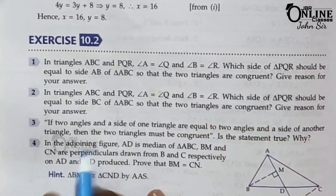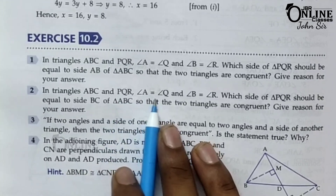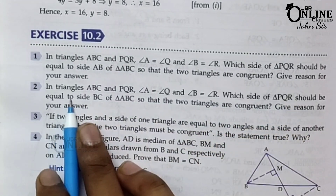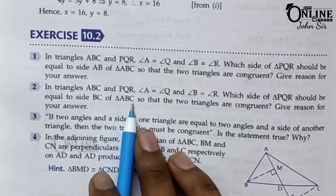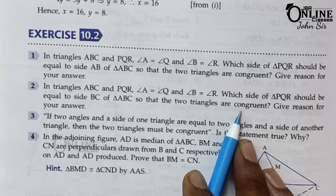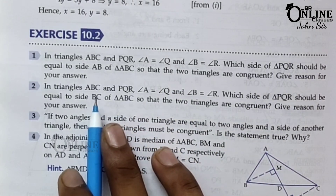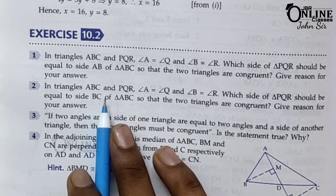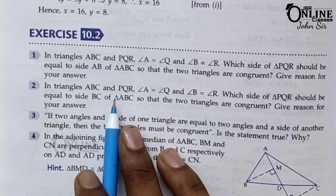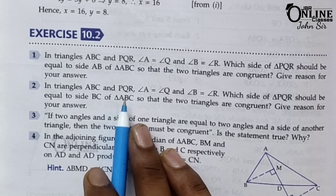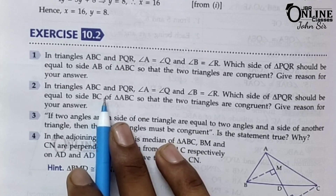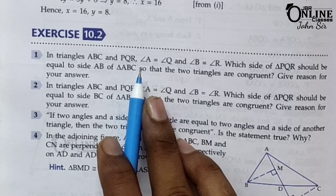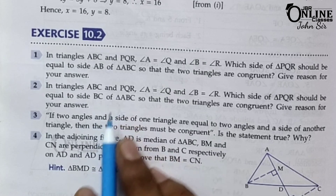In number two, in triangles ABC and PQR, angle A equal to angle Q, angle B equal to angle R. Which side of triangle PQR should be equal to side BC of triangle ABC so that the two triangles are congruent? Here side BC is equal to PR. As their included sides AB equal to QR will be equal for their congruency, when BC equal to PR. So first answer: AB equal to QR. Second answer: BC equal to PR.